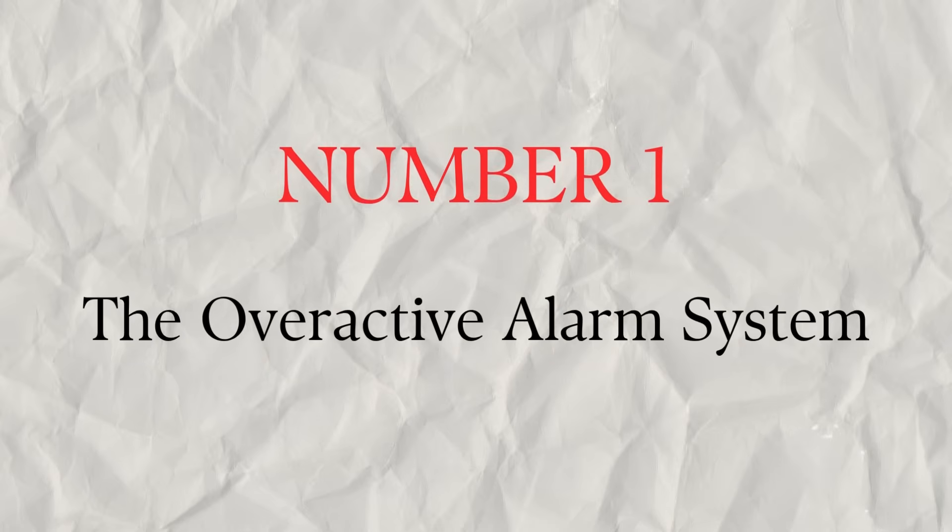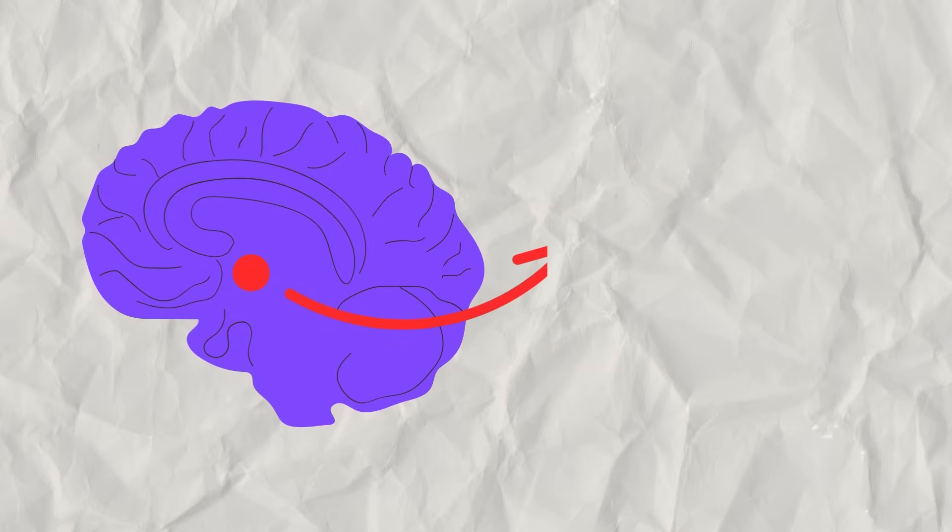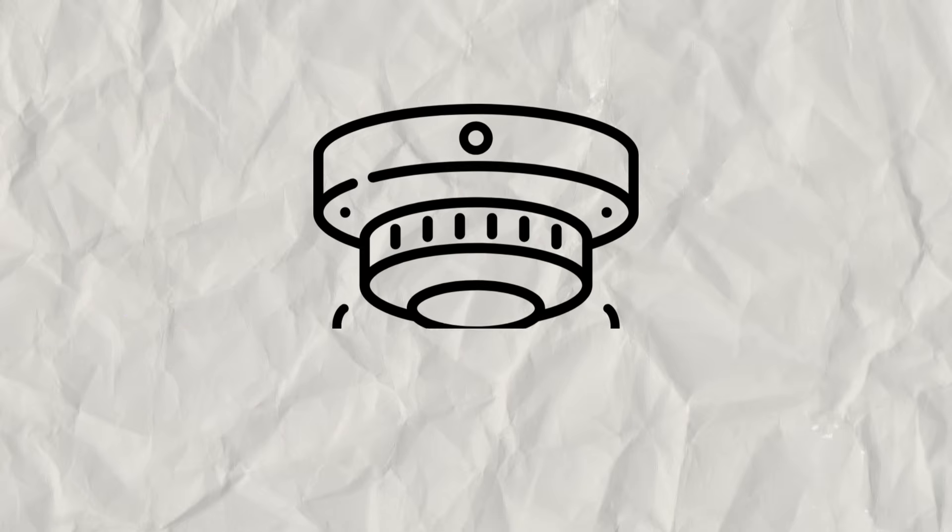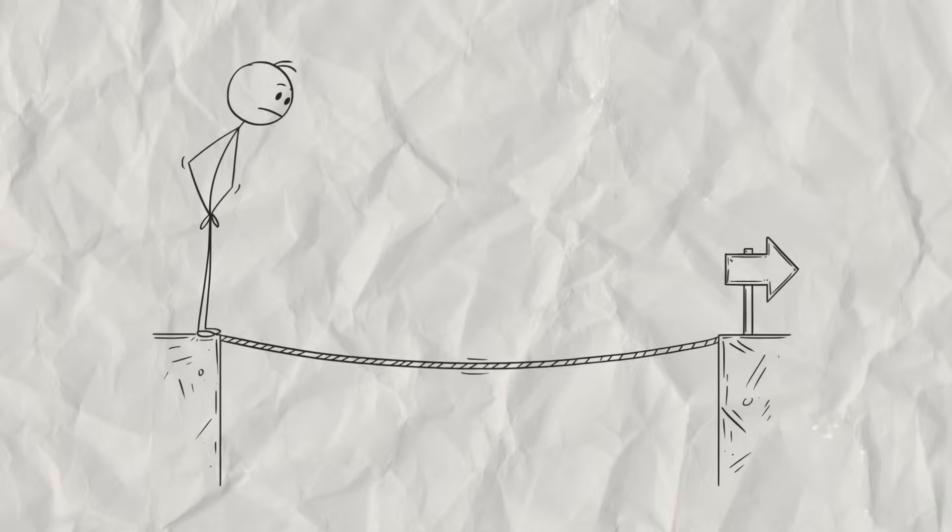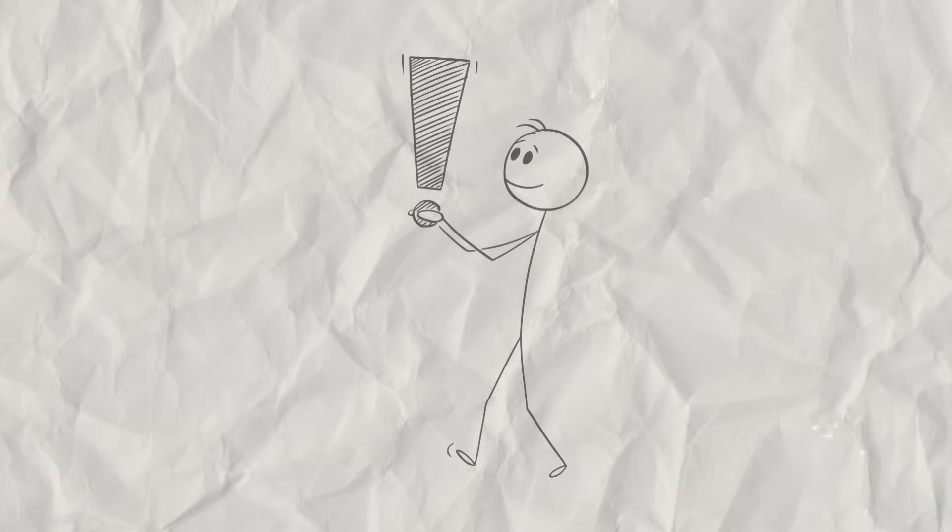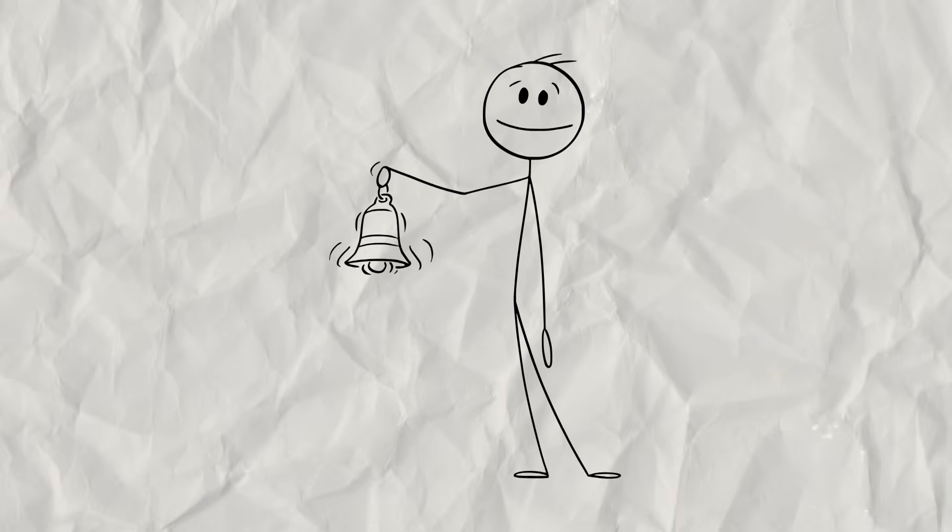Number one, the overactive alarm system. Deep inside your brain, there's a small almond-shaped structure called the amygdala. Think of it as your body's smoke detector. Its job is to scan for danger and, when it finds it, sound the alarm.